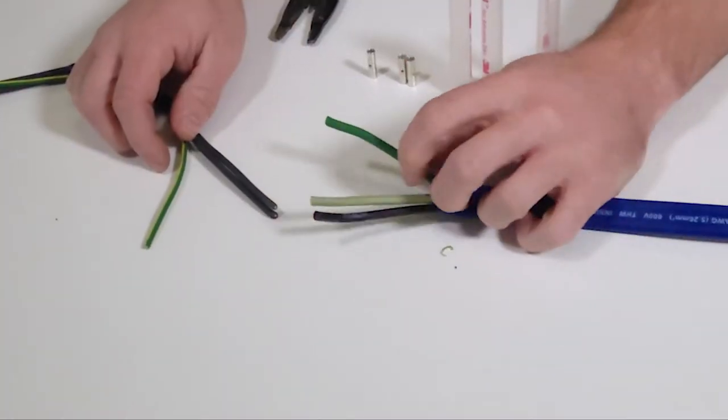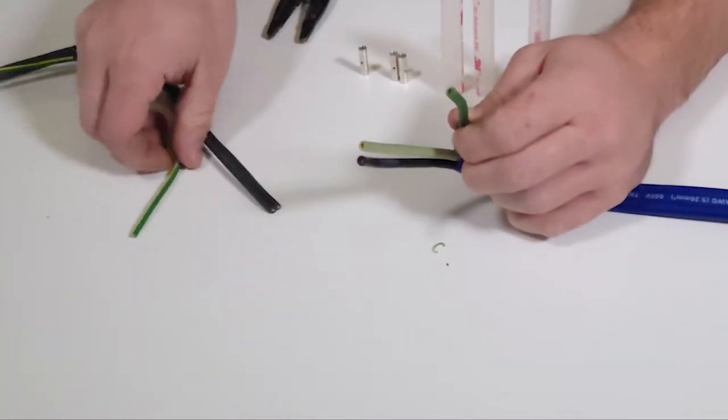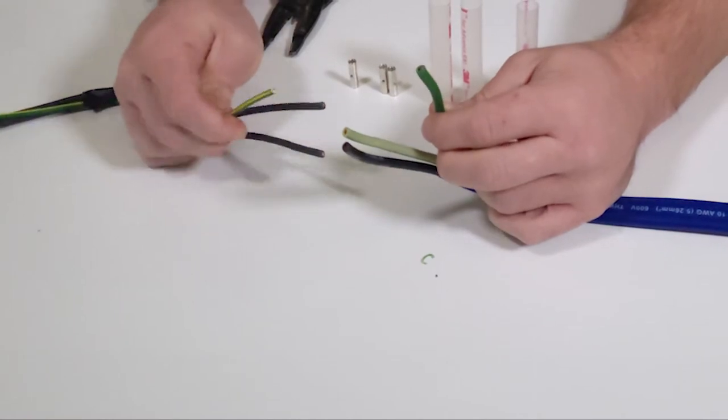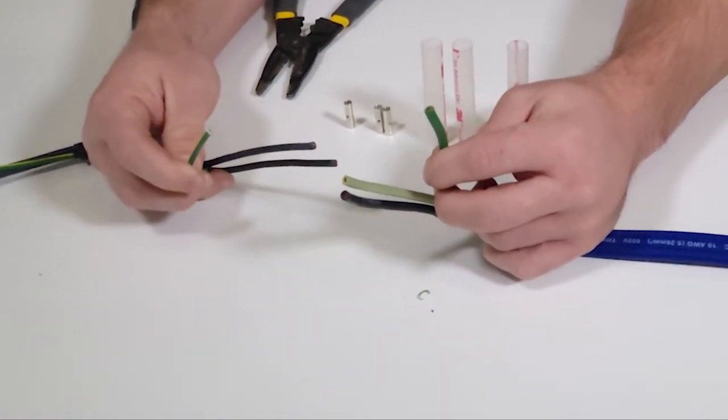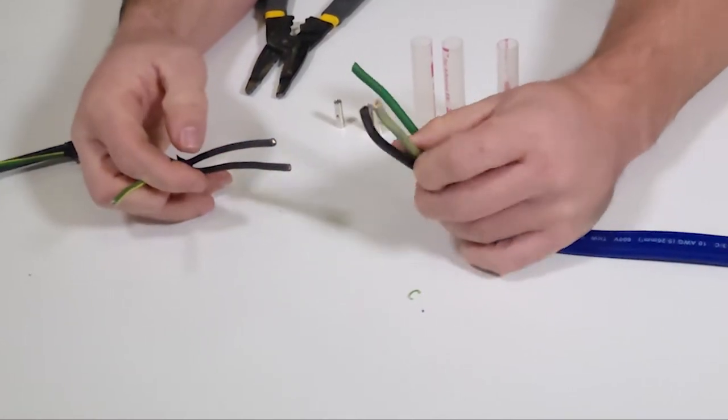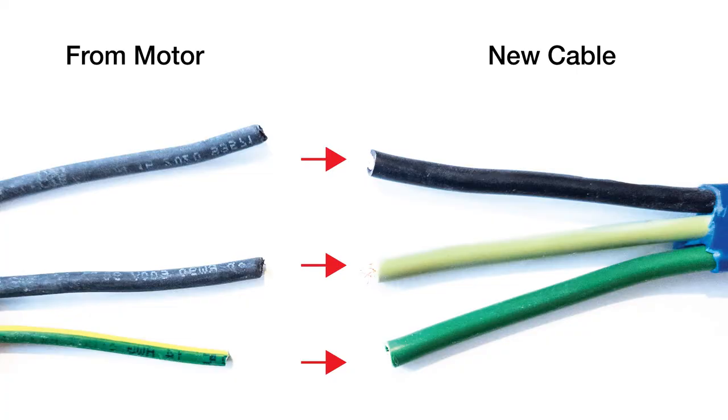Your 3-wire motor will have 2 black wires and 1 green and yellow wire. Your new cable will have a green wire, a yellow wire, and a black wire. Sometimes the yellow is tinted slightly green from the outer blue covering. It is important to remember the dark green is connected to the yellow and green wire from your motor, and the remaining 2 wires can connect in any order.